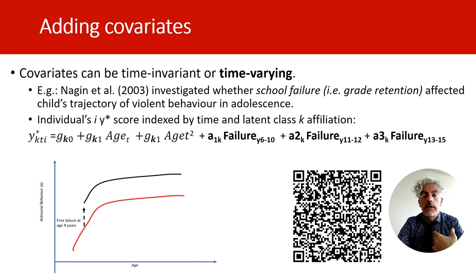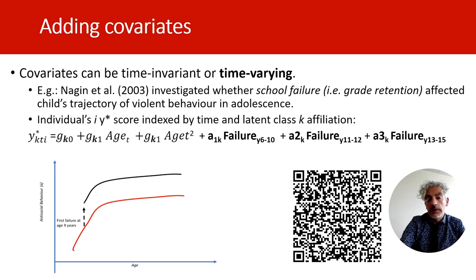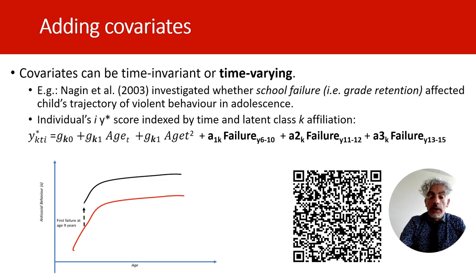In many applications, covariates used to predict trajectory-based groups are time-invariant — for example, they represent events that happened before the study started. However, it is also possible to include time-varying covariates. I refer here to a study by Nagini and colleagues — the QR code links to this publication. The researchers investigated trajectories of violent behavior in adolescence and tested whether school failure was associated with changes in the expected trajectory. In Quebec, where the study was conducted, school failure led to grade retention.